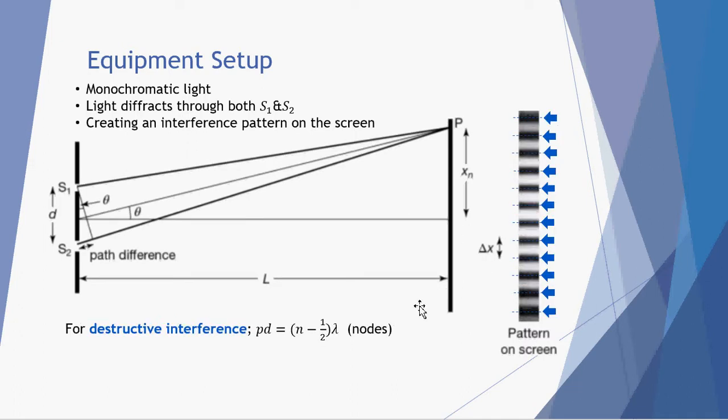On the other side when we have a path difference that is equal to an odd multiple of lambda on 2, meaning that the path difference is half lambda, 1 and a half lambda, 2 and a half lambda, 3 and a half lambda, we have effectively a crest from one wave source interacting with a trough from another wave source and we get cancellation or destructive interference. These points are sometimes referred to as nodes. So we have nodes here at these dark points on our interference pattern and they represent n minus a half times lambda as a path difference or what we like to say as an odd multiple of lambda on 2.